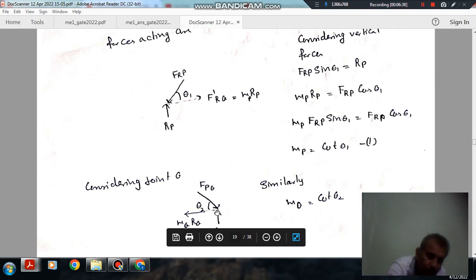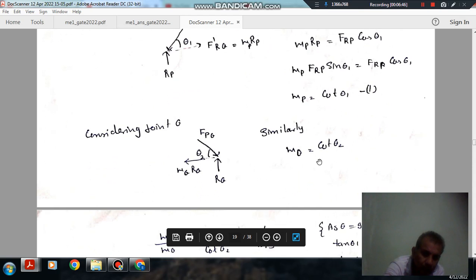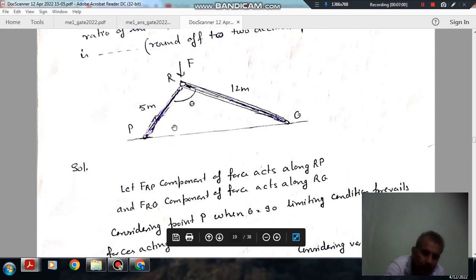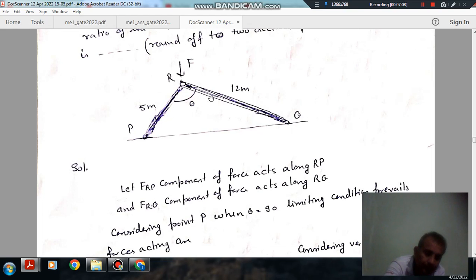And the force of friction will be in this direction. So mu_Q will be, likewise in the previous case, will be cot(theta2). Now, so mu_P by mu_Q is cot(theta1) by cot(theta2). If angle theta1, then tan(theta) is 12 by 5, so cot(theta) is 5 by 12. And cot(theta2) will be 5 by 12.